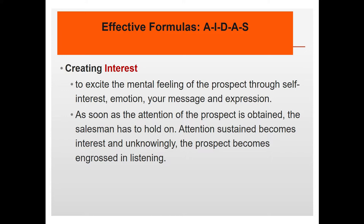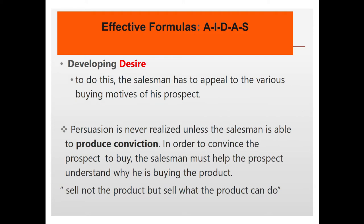'D' stands for Desire. The salesman has to appeal to the various buying motives of the prospect. Desire is an intense longing to own and use a certain product. Persuasion is never realized unless the salesman is able to produce conviction in order to convince the prospect to buy. The salesman must help the prospect understand why he or she is buying — sell not the product but sell what the product can do, meaning you sell how the product would benefit your customers. 'A' in IDAS stands for Action.